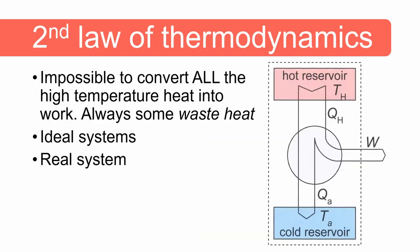We will also look at the second law of thermodynamics, which states that it is impossible to convert all the high-temperature heat into work. There will always be some waste heat, and this is true even for ideal systems. In an ideal system, there is no friction or turbulence, which results in the maximum theoretical efficiency of the energy conversion system. In real systems, there are all sorts of inefficiencies that reduce the actual efficiency.